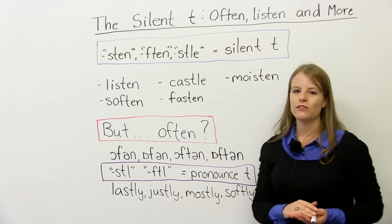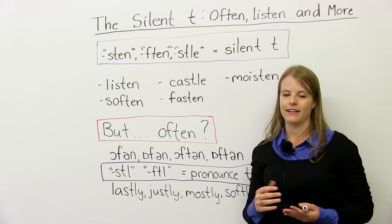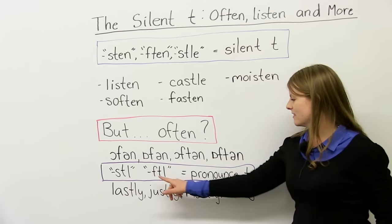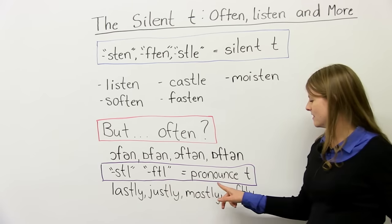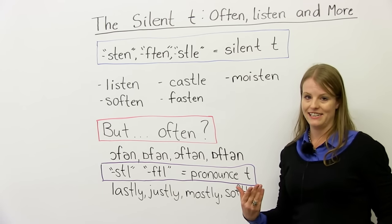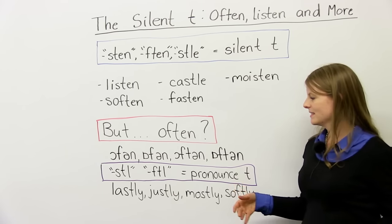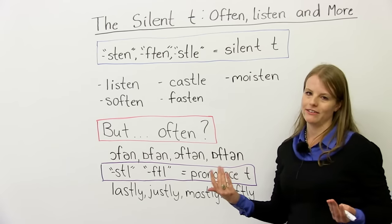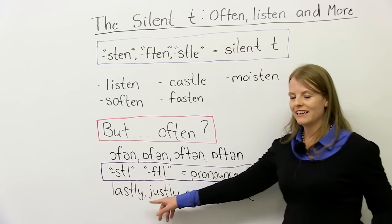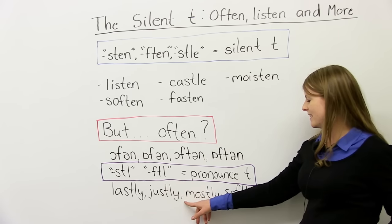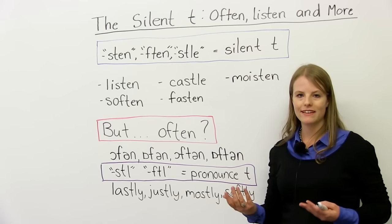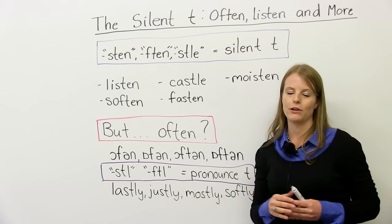Now let's look at some words where we actually have to pronounce the T. So if you see S-T-L, F-T-L, these are signs that you usually pronounce the T. What are some examples? Well, you can pronounce the T. Lastly, you could also say last-ly. It's mostly. Soft-ly. You can say it with or without, depending on where you're from.